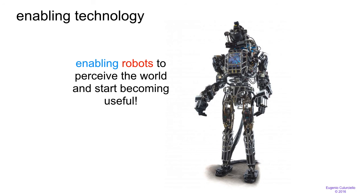What deep learning will really enable is finally allowing robots to perceive the world and start becoming useful. They might not be large humanoid robots — they could be a small cooking robot that replaces your kitchen, or a cleaning robot that goes beyond the Roomba vacuum cleaner to clean every surface and even fold laundry. Even though these seem like mundane tasks, they are extremely important. Maybe the biggest robot technology coming out of deep learning already is the autonomous car, where machines interpret vision and are able to guide the vehicle through the world just like you do.